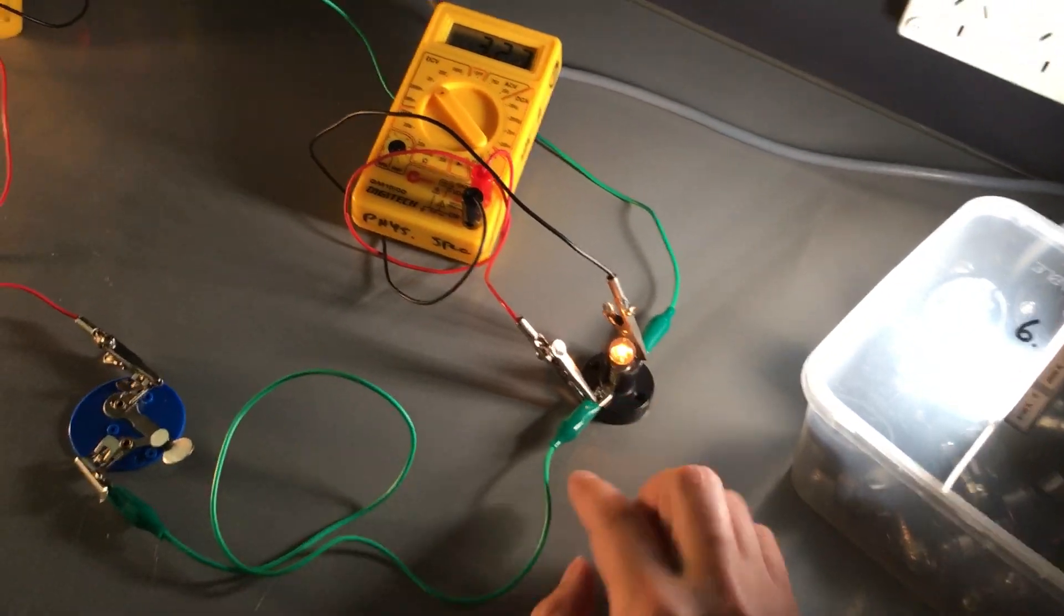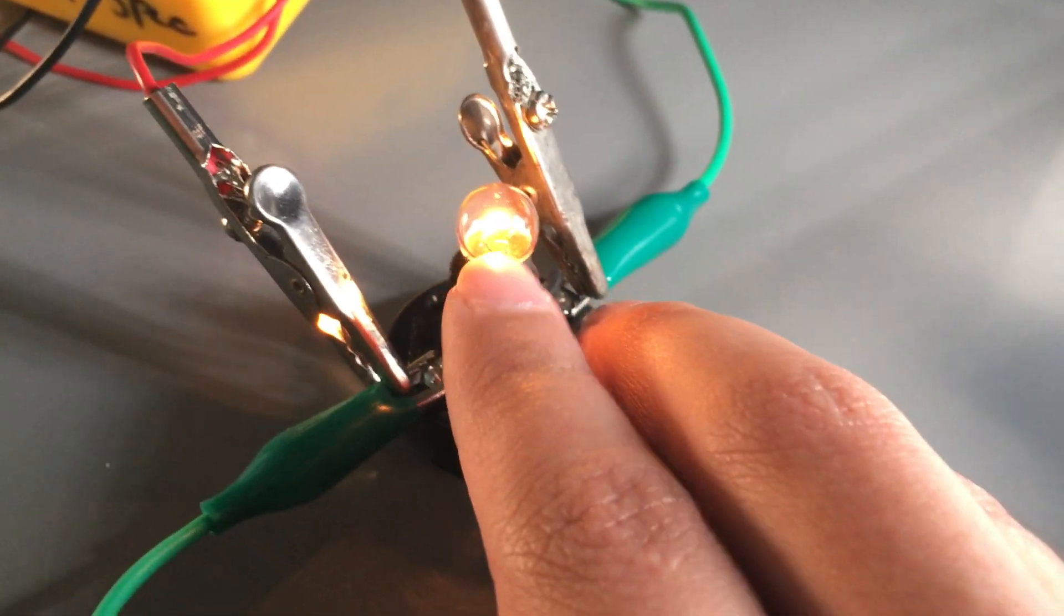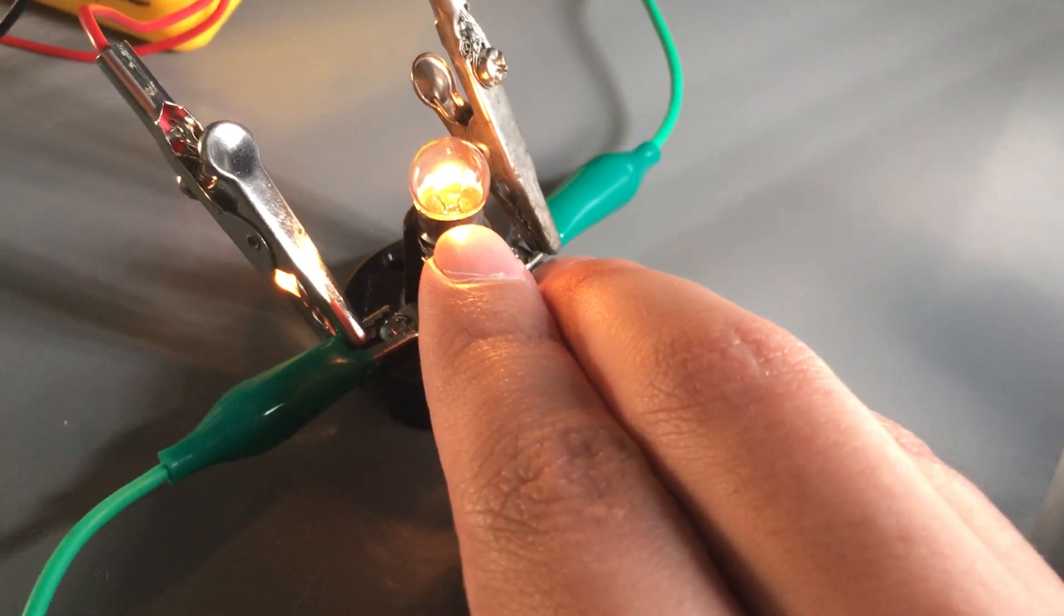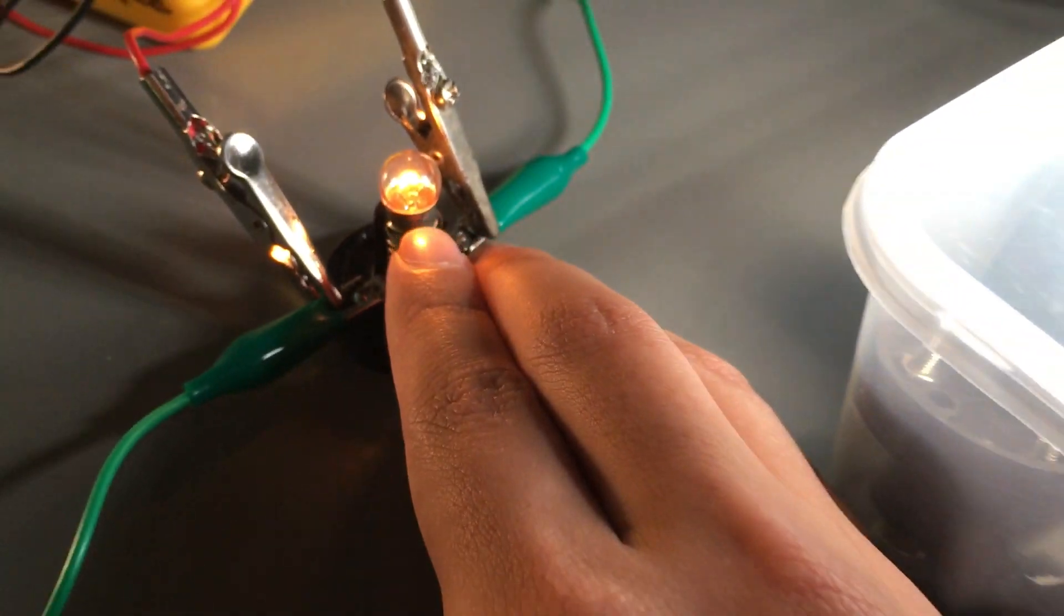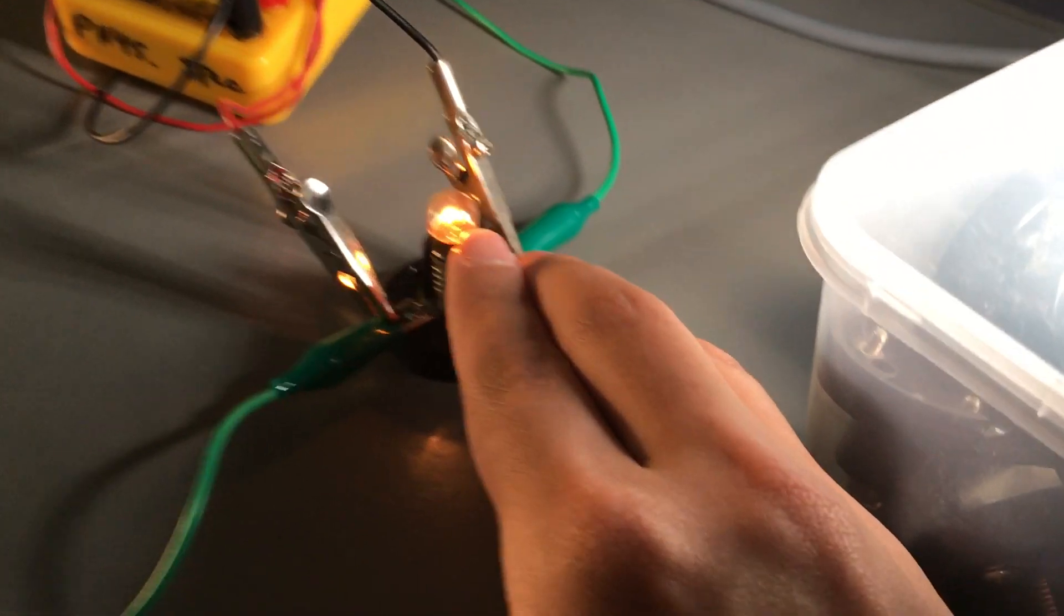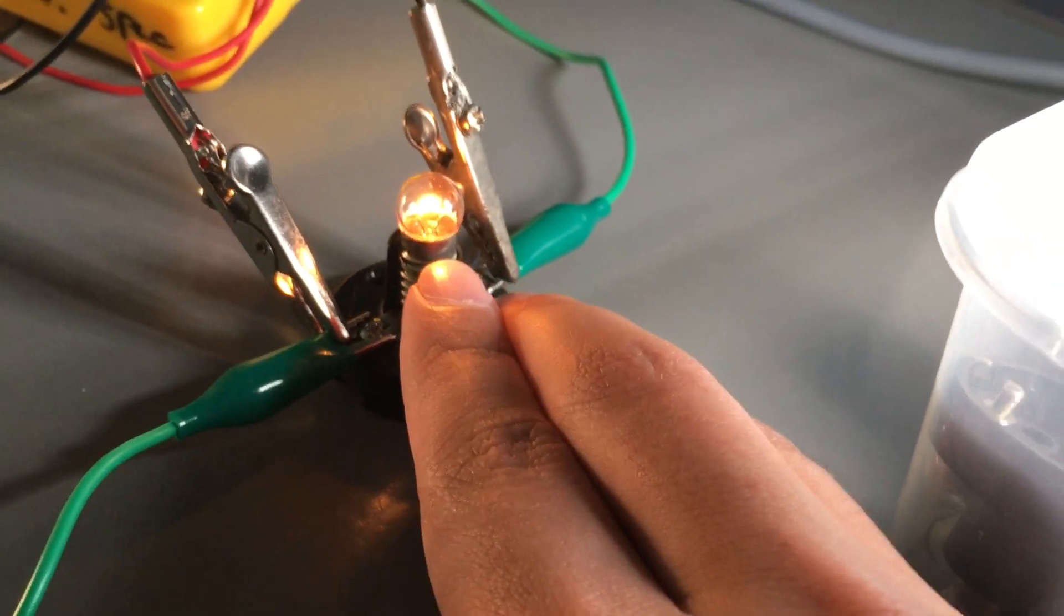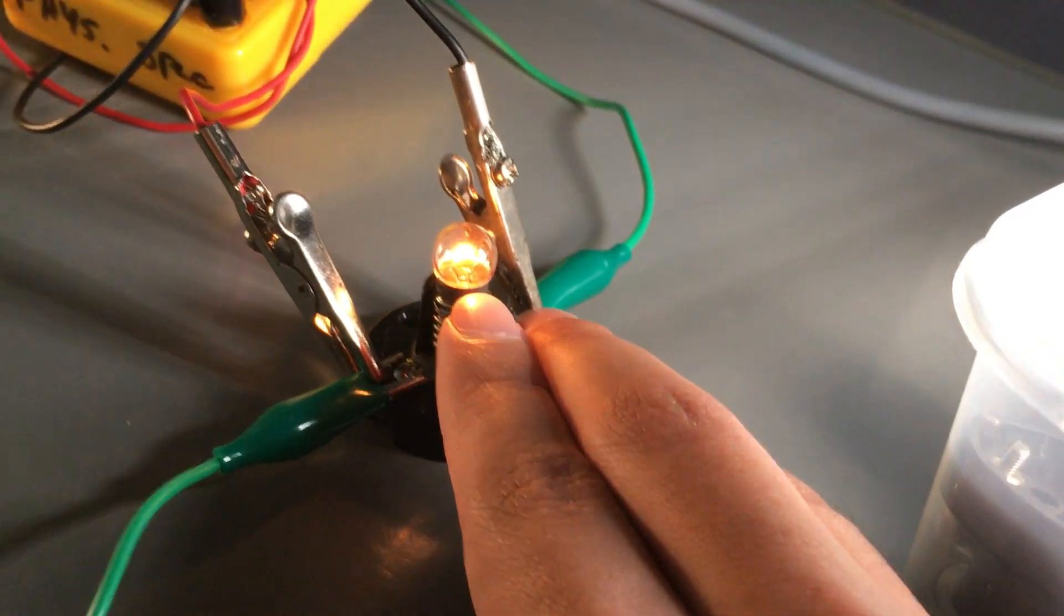However, we do have a light bulb here and it's an old-school tungsten or filament or halogen or incandescent light bulb, however you like to describe it. And this thing functions by heating up to the point where it starts to emit light.